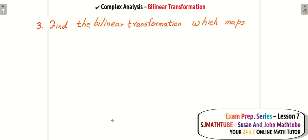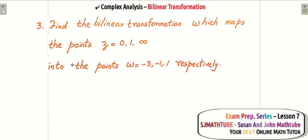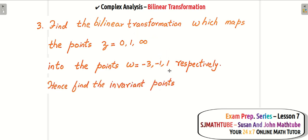Let's move ahead. Find the bilinear transformation — this is very important. We have the input infinity, so we have to manipulate the formula slightly. The output values are minus 3, minus 1, 1. Input 0 gives output minus 3, input 1 gives output minus 1, and input infinity gives output 1. And a new important word: find the invariant points.